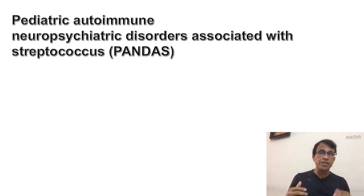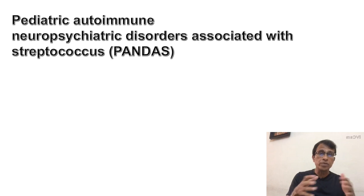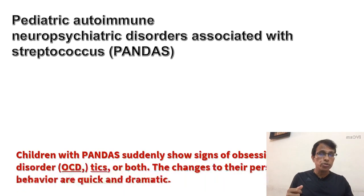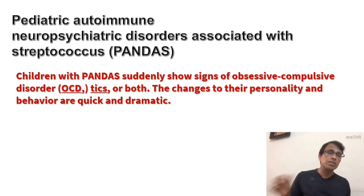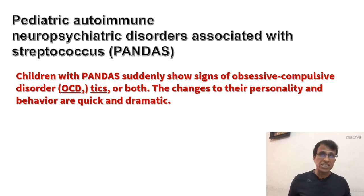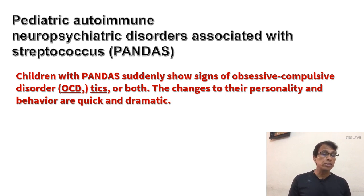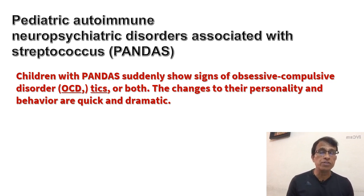Now, when the tonsil or adenoid gets infected with Streptococcus — not other pathogens, specifically Streptococcus — this hidden syndrome suddenly gets manifested in these children. Children with PANDAS will suddenly show signs of obsessive compulsive disorder (OCD), or tics where the fingers move involuntarily, or both OCD plus tics. Sometimes the parents don't even know about this, and it will suddenly manifest when the child has a Streptococcus infection of the tonsil and adenoids. So PANDAS is aggravated by streptococcal adenoid and tonsil infection.